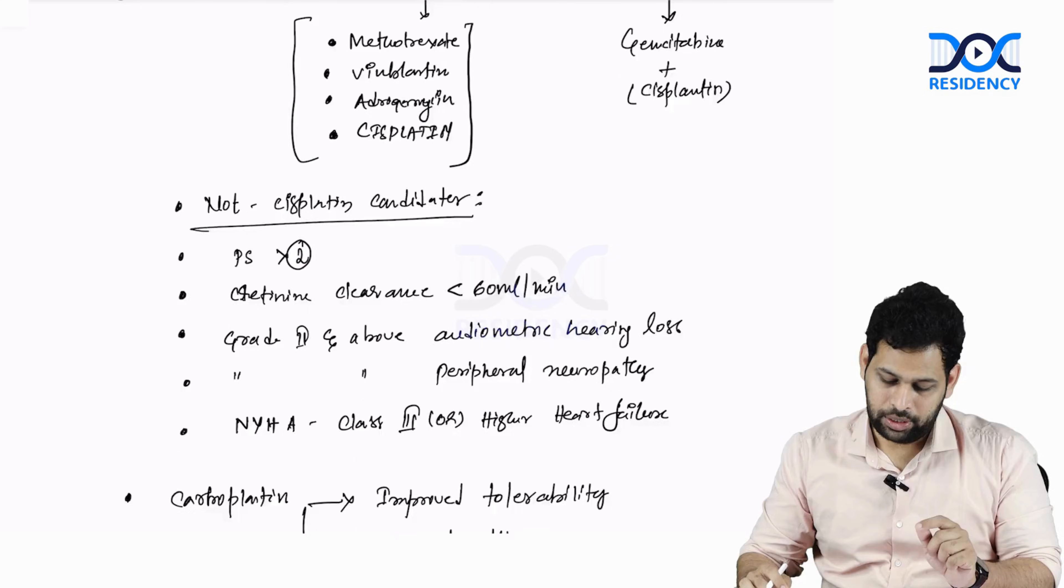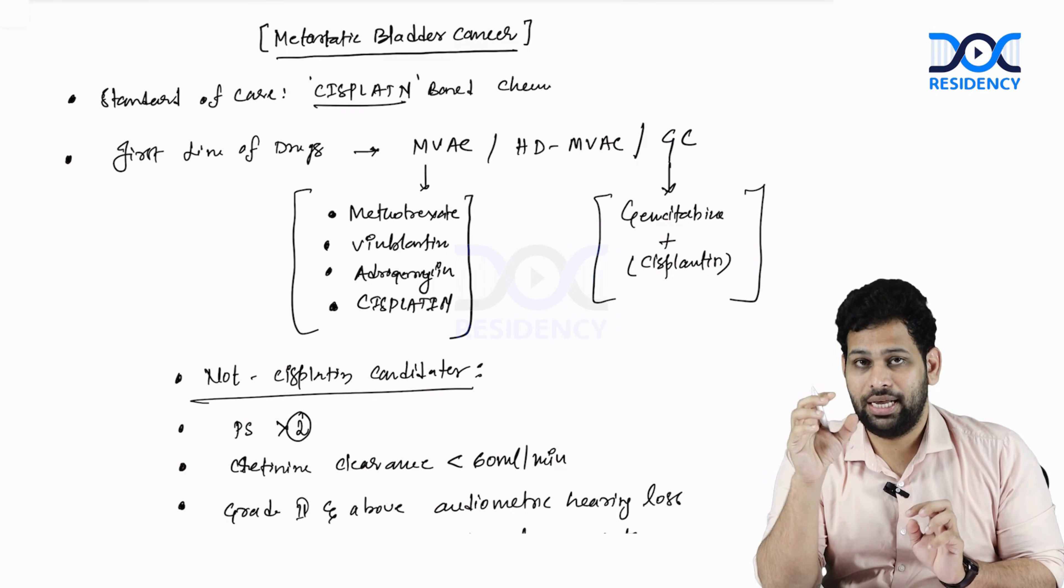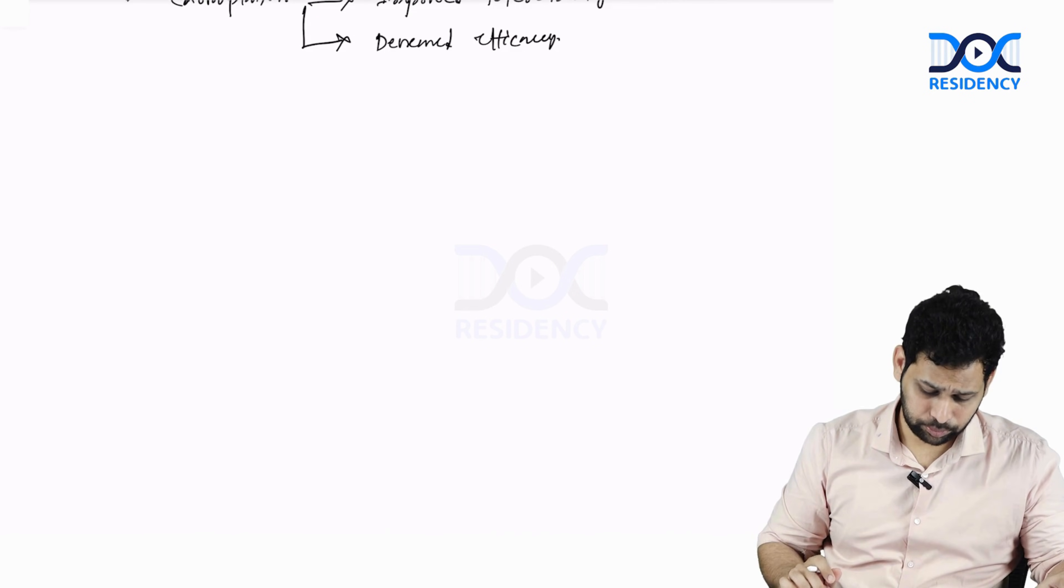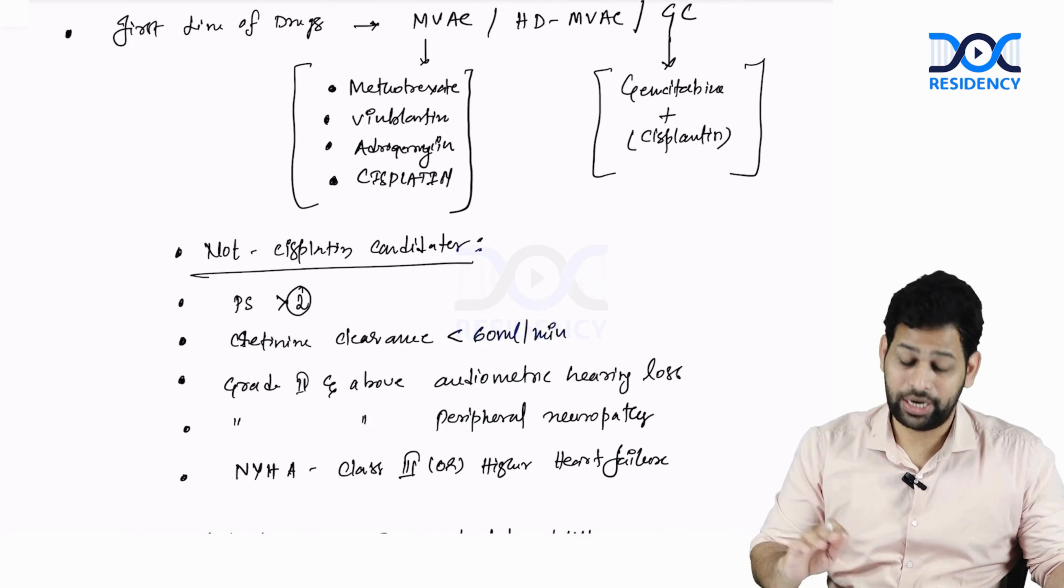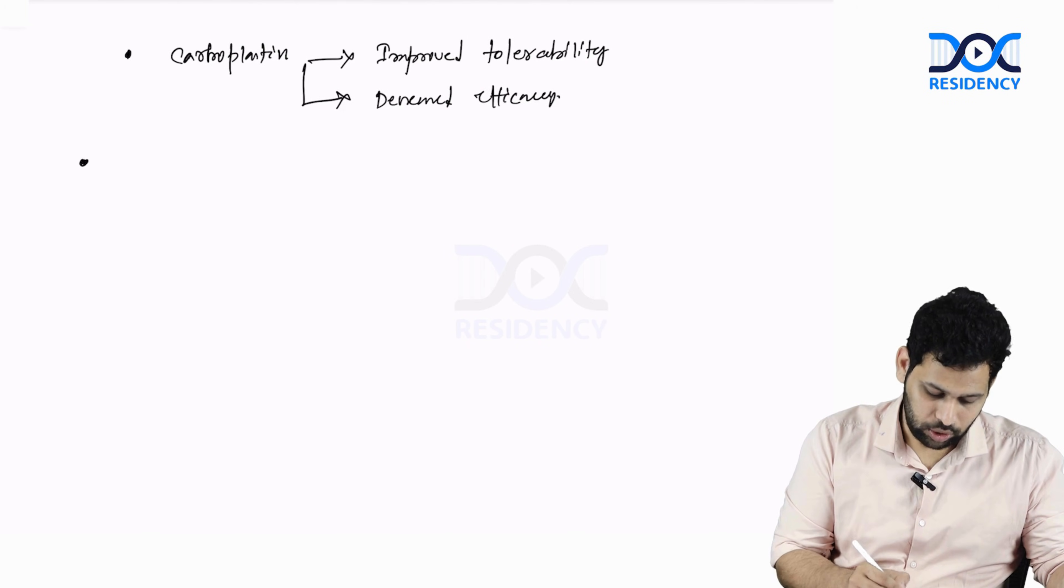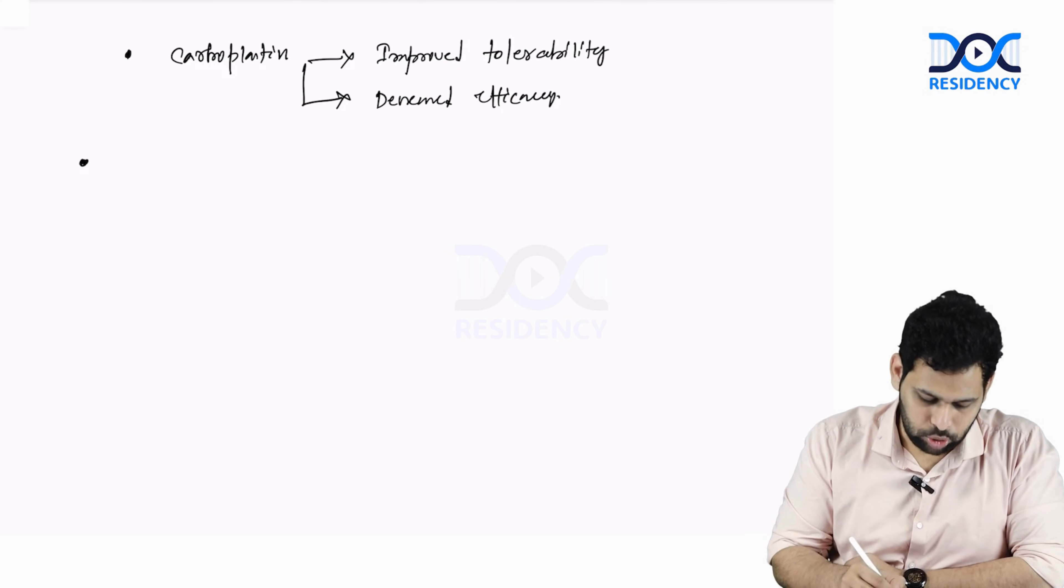Gemcitabine plus cisplatin therapy, because of the low toxicity, this GC regimen is widely used than MWAC regimen. This is about the standard of care. What are the other drugs that can be used in case of metastatic bladder carcinoma?